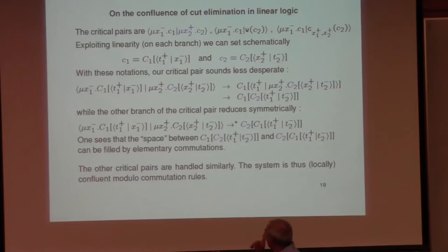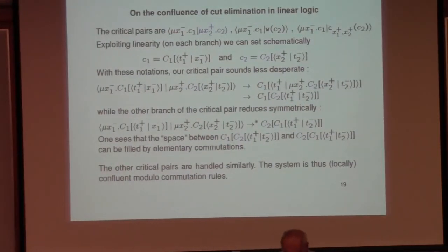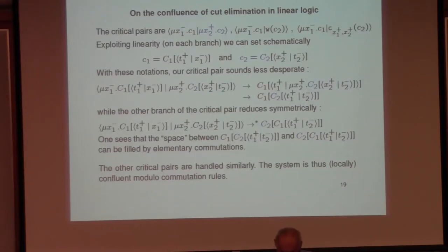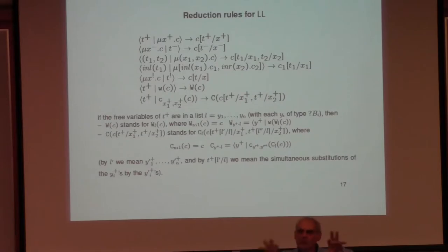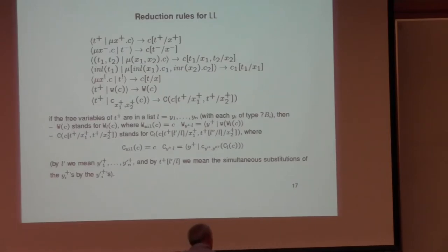I must also recall that I tried to discuss the question of confluence and showed you one of the critical pairs that arise in linear logic. There are actually two other critical pairs which I didn't highlight, but they can be treated well. But there is one critical pair which, if it were there, would really be harmful. The critical pair that is avoided by linear logic is the critical pair where you have weakening and contraction on two sides — any combination of weakening and contraction on two sides is bad.